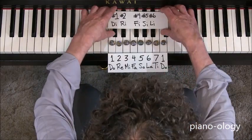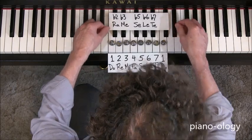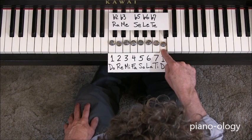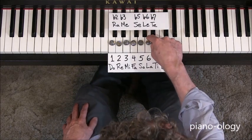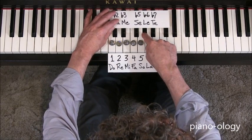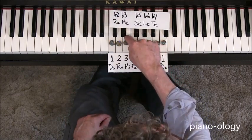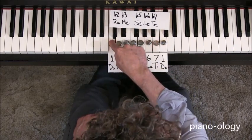So let's do the same thing coming down and name the same notes. Now we're coming down, so we're going to use flats. So we go 1, 7, flat 7, 6, flat 6, 5, flat 5, 4, 3, flat 3, 2, flat 2, 1.